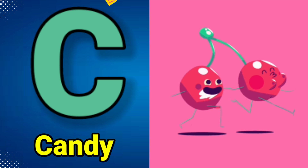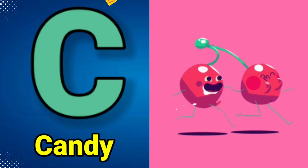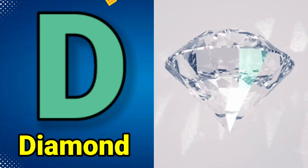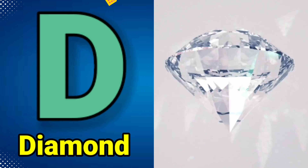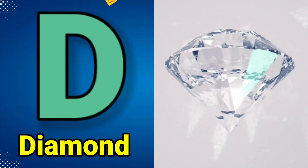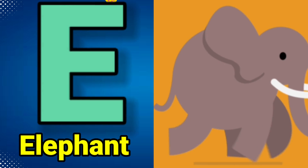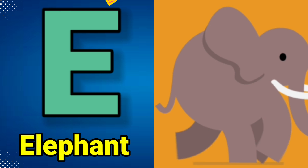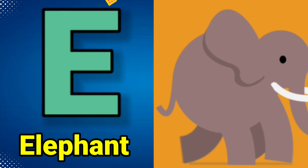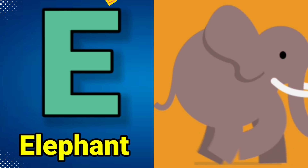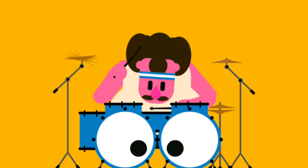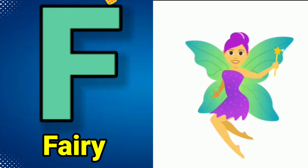C-C-Candy, C-Candy. D is for Diamond. D-D-Diamond, D-D-Diamond, D-Diamond. E is for Elephant. E-E-Elephant, E-E-Elephant, E-Elephant. F is for Fairy.